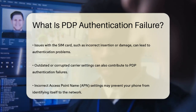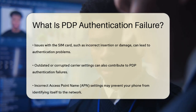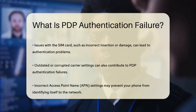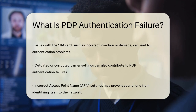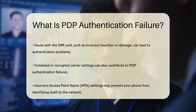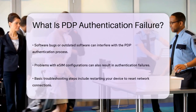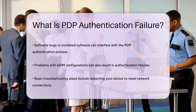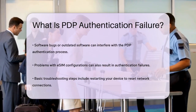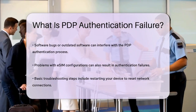Outdated or corrupted carrier settings on your device can also cause problems. These settings are crucial for your phone to connect to the network, so if they're incorrect or outdated, it can lead to PDP authentication failures. Incorrect access point name, or APN settings, are another potential culprit. The APN is what your phone uses to identify itself to the network, so if these settings are wrong, you won't be able to get online.